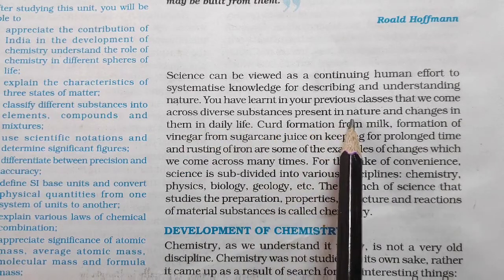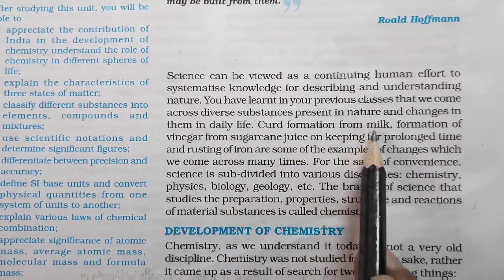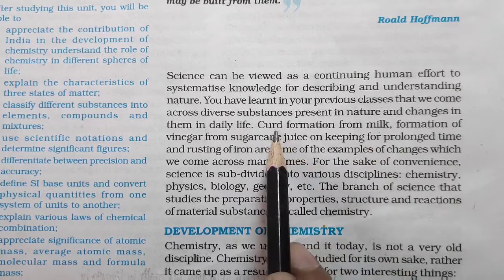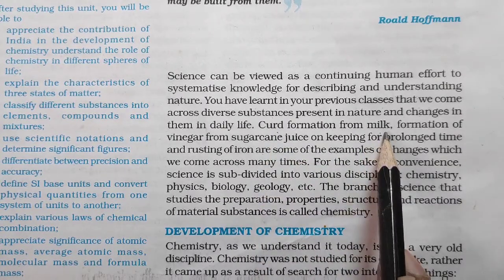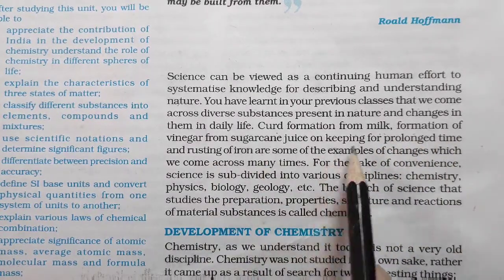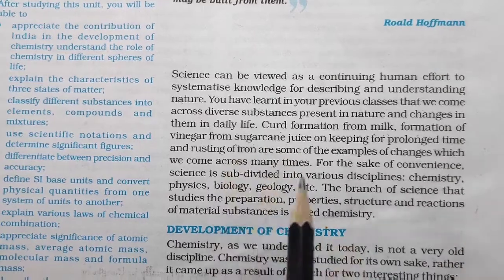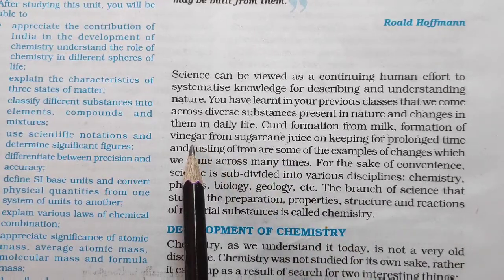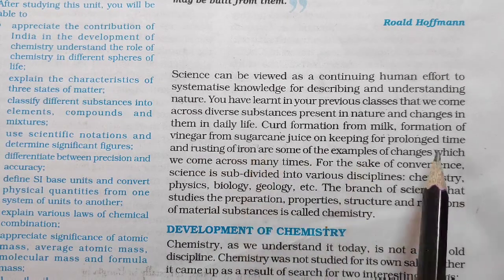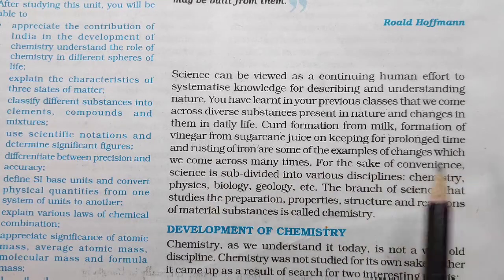For example, curd formation from milk occurs due to Lactobacillus bacteria; lactic acid is present in curd and lactose is the sugar in milk. Another example is formation of vinegar from sugarcane juice on keeping for a prolonged time - there are two types: white vinegar and brown or black vinegar, the black one being made from sugarcane juice. Rusting of iron is another example of changes we come across many times.